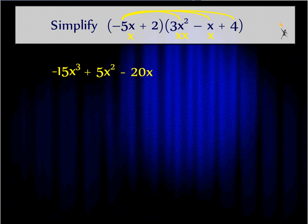Now I've distributed that negative 5x to every term in the second set of parentheses. Now I have to do the same thing with the 2. 2 times 3x squared gives me 6x squared. 2 times negative x gives me negative 2x. And 2 times 4 is 8.